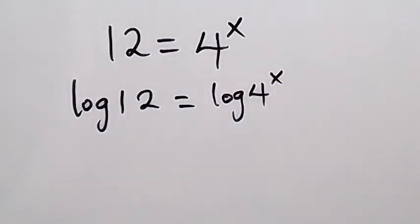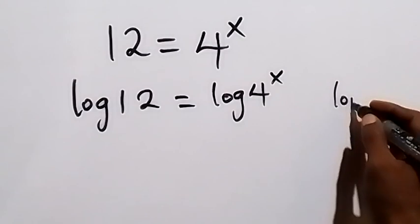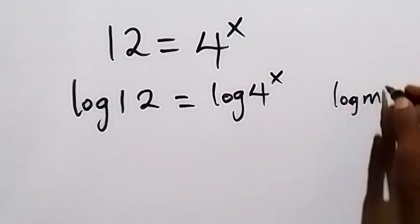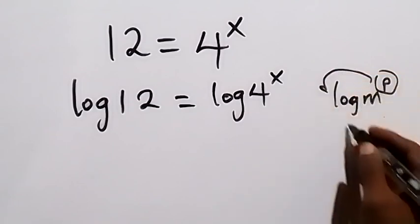So taking the log on both sides we have this. Then when we apply the law of log, the power law: log m raised to power p, the power of p can be taken to the back and we have p log m.